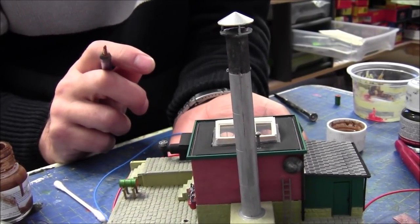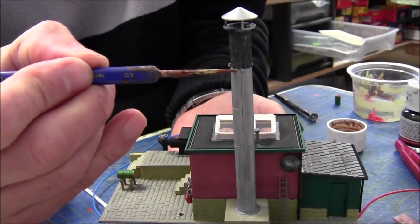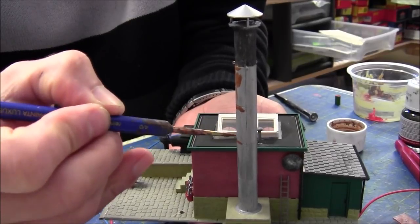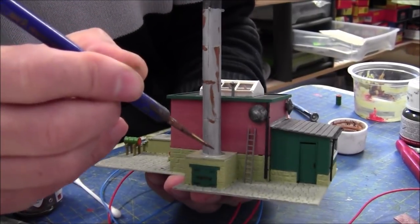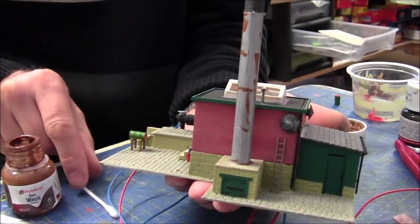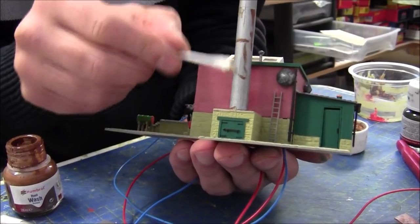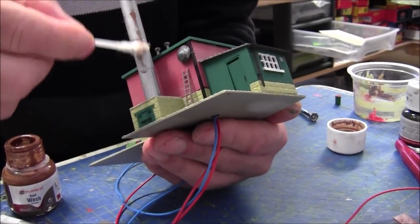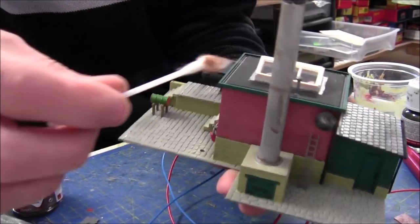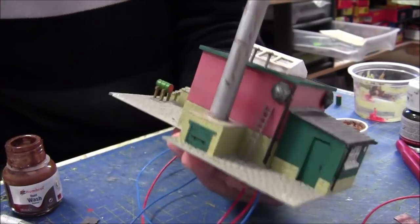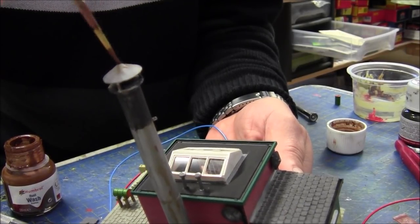First I'm adding some rusty bits to the chimney. I'm using the Humbrol brush wash - just pick out a few bits and let it run down. Before it settles, get a cotton bud and take off as much as you want. I just want a little bit of rust on there, not over the top. Just where it's been running down or putting a few marks on top.